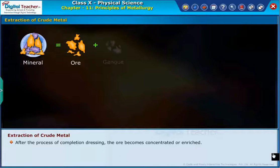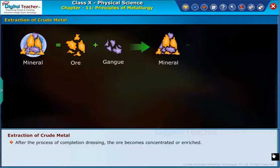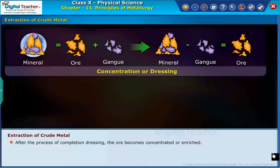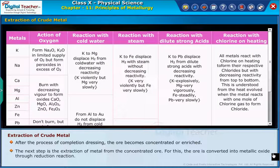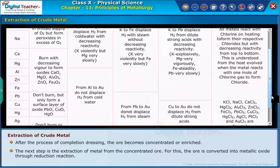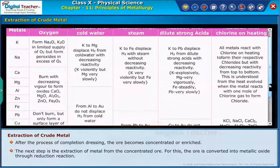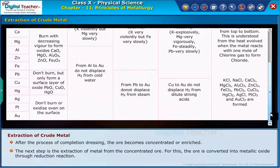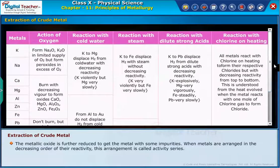Extraction of crude metal: After the process of concentration or dressing is complete, the ore becomes concentrated or enriched. The next step is the extraction of metal from the concentrated ore. For this, the ore is converted into metallic oxide through a reduction reaction. The metallic oxide is further reduced to get the metal with some impurities.